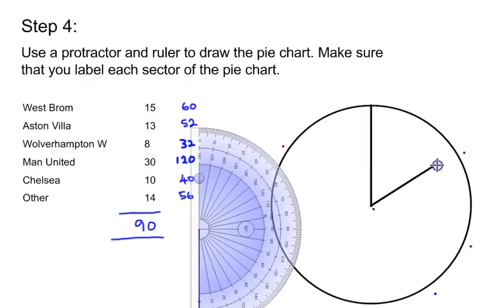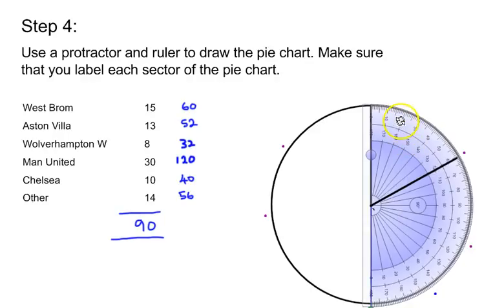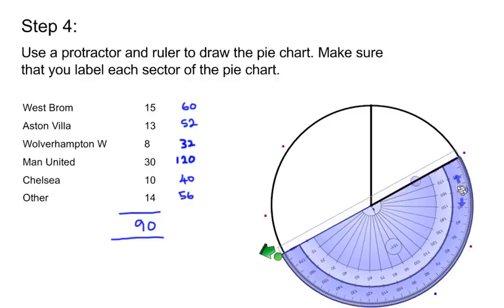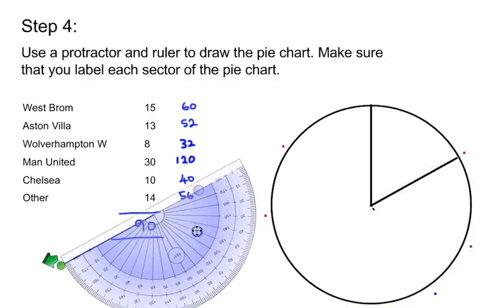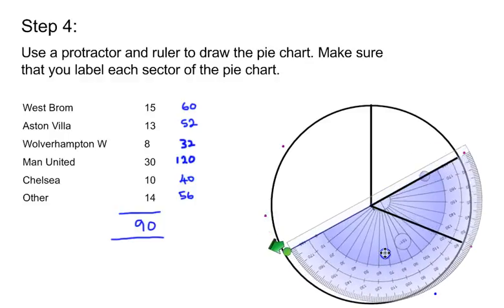Then put your protractor back onto the paper and rotate the protractor so the new zero line is the line that you've just drawn. The second section is 52 degrees for Aston Villa. Mark using the outside scale where 52 degrees is. Then as before, protractor off, draw a straight line from the center of the circle to your 52 degree mark.